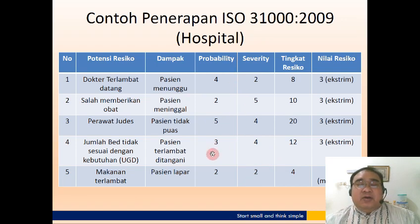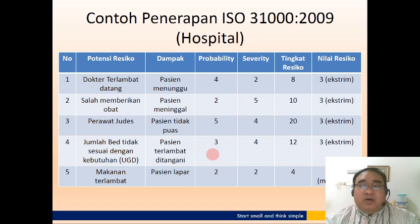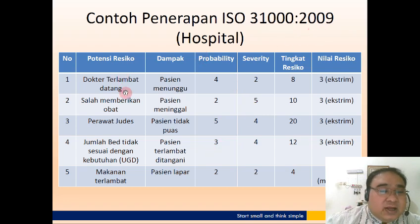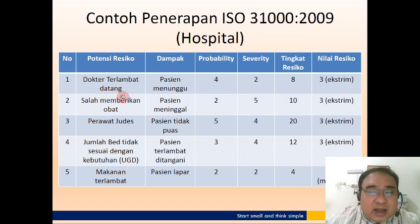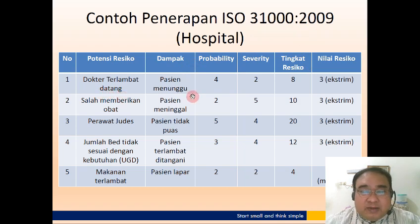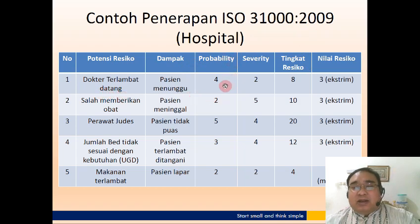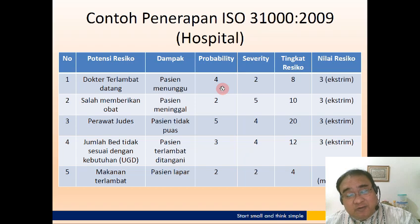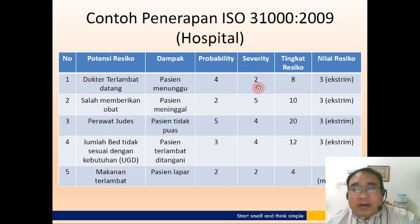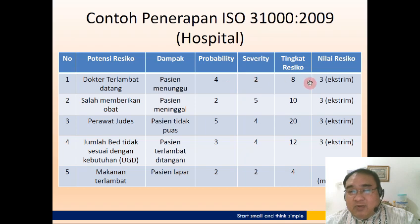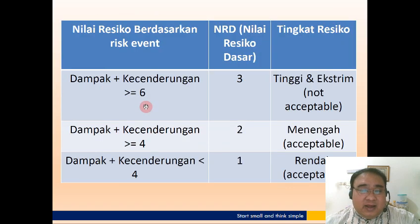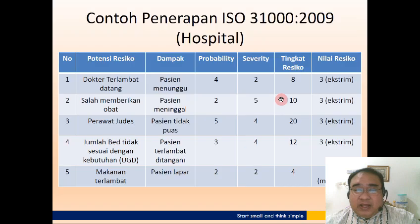Contoh penerapan manajemen resiko ISO 31000 versi 2009 dalam bidang hospital. Yang pertama, dokter terlambat datang — dampaknya pasien menunggu, probability-nya 4 karena dokter sering terlambat, tapi dampaknya tidak terlalu besar, sekitar 2. Dikalikan 4 kali 2 hasilnya 8. Nilai resikonya 3, masuk kategori ekstrim karena lebih dari 6.